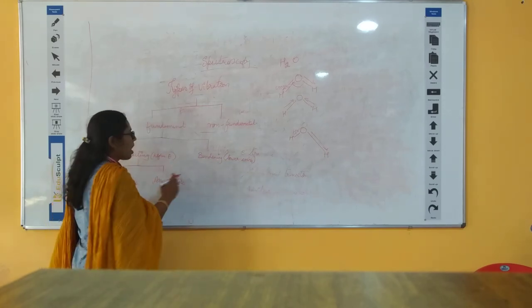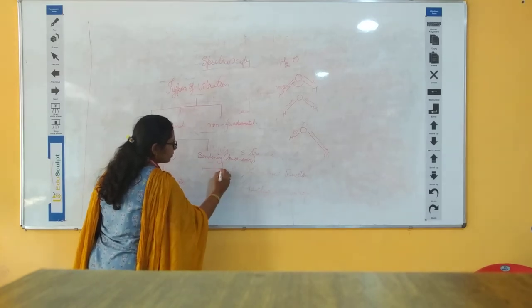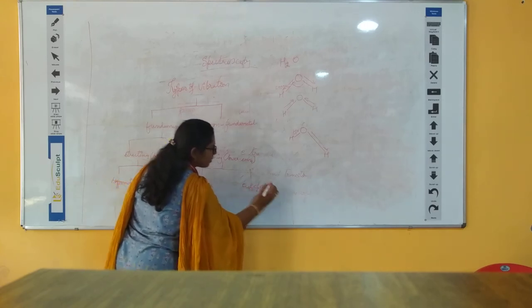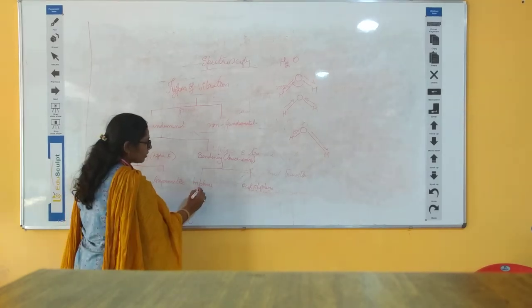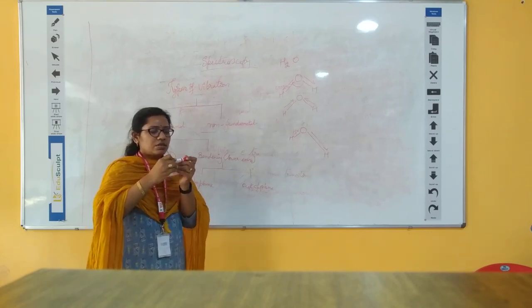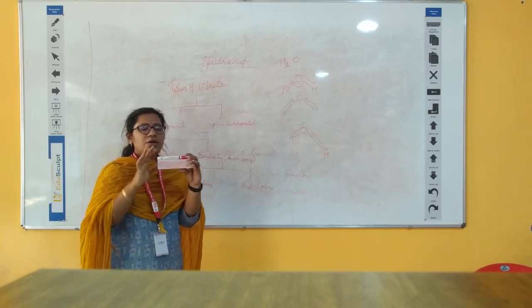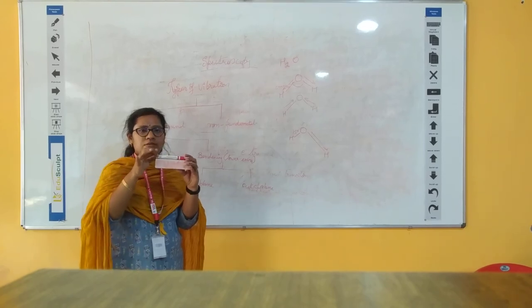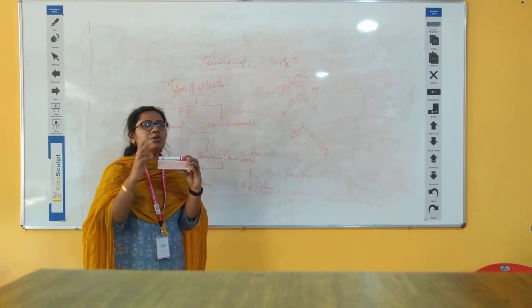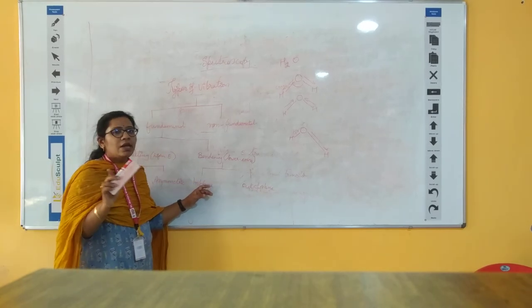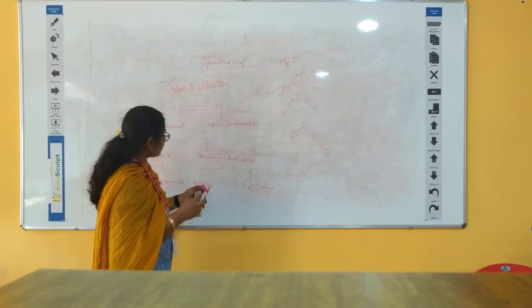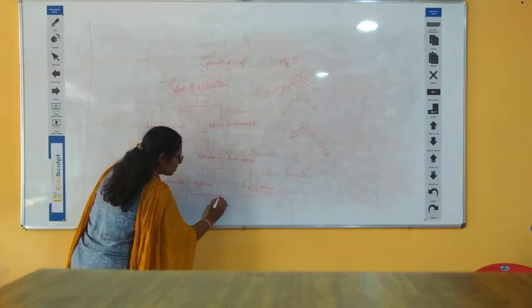In bending vibrations there are two types: in-plane bending and out-of-plane bending. If the molecule moves within the considered plane, it is in-plane bending; if it moves out of that plane, it is out-of-plane bending. In bending, there is no change in bond length, but there is a change in bond angle. For in-plane bending, there are two subtypes: scissoring and rocking.